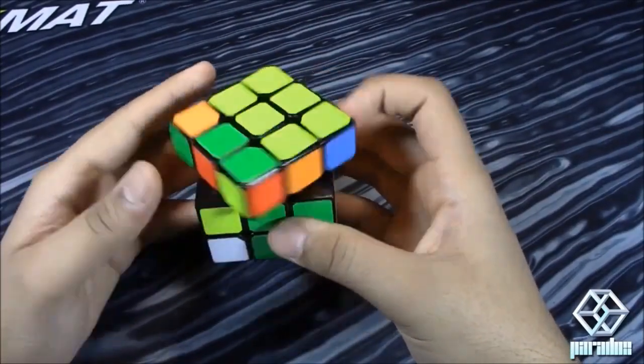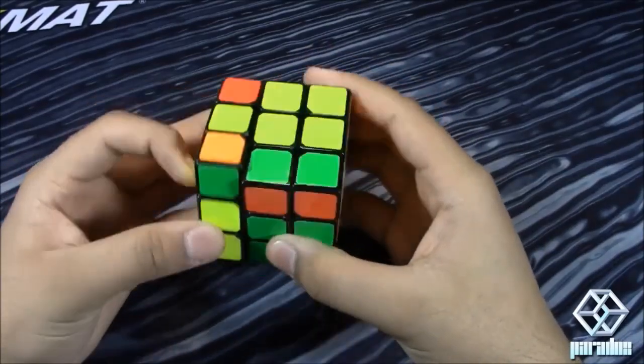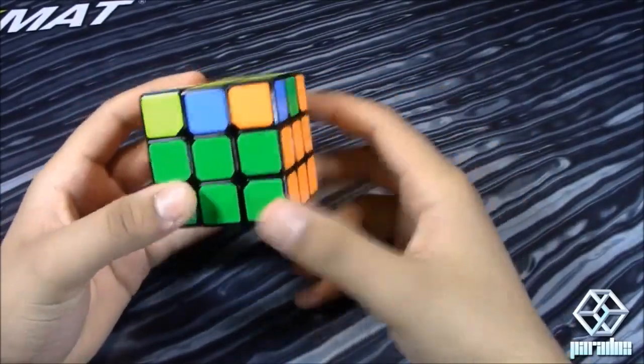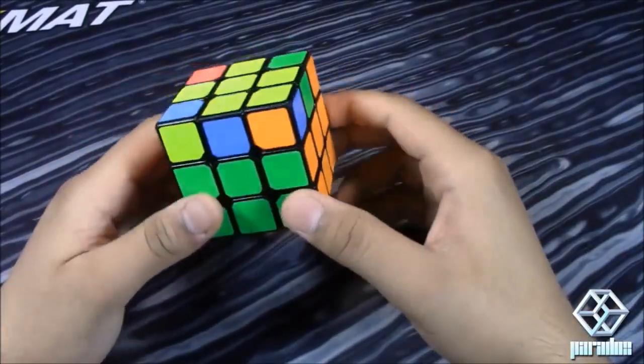So for this one, I would go like this to pair them up and then insert it. So as you saw, that was almost rotationless F2L. I had one cube rotation for the first one, just one cube rotation.